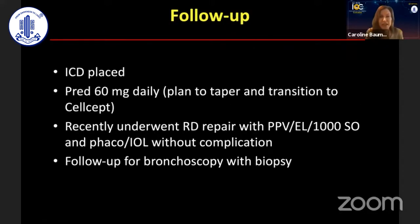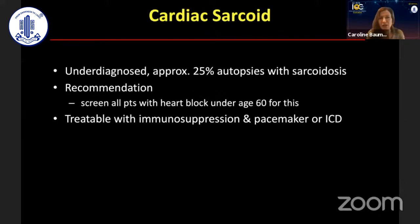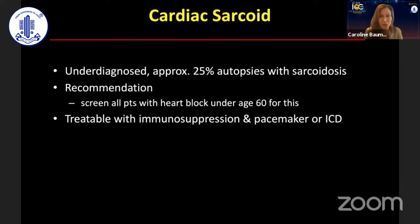So the patient had an ICD, was put on prednisone and transitioned to other immunosuppressives, then had retinal detachment repair with oil and had a more targeted sarcoid systemic evaluation. Cardiac sarcoid is underdiagnosed — found in about 25% of autopsies of people with sarcoid. The recommendation is to screen all patients with heart block, because it is treatable with a pacemaker and immunosuppression.